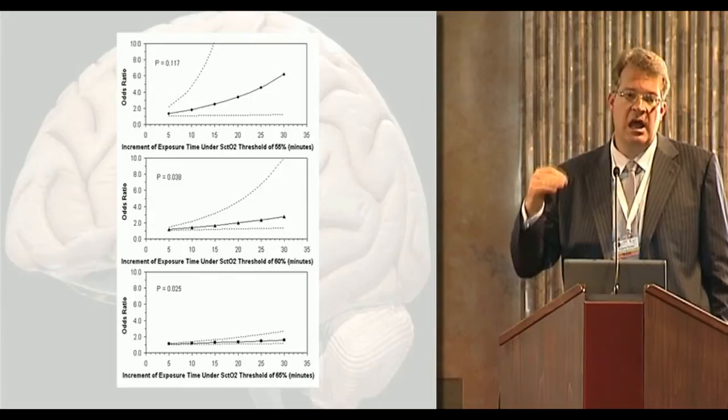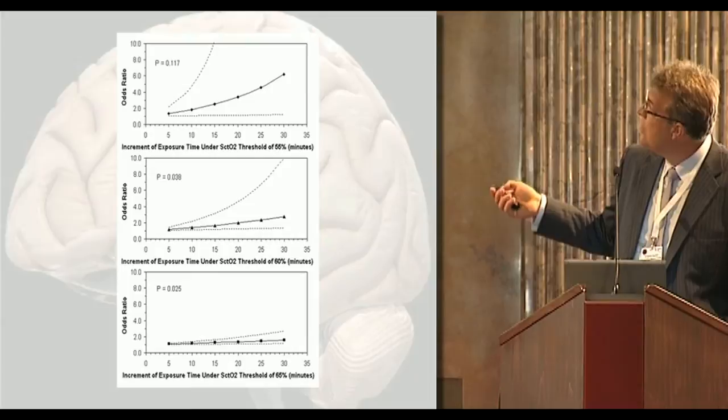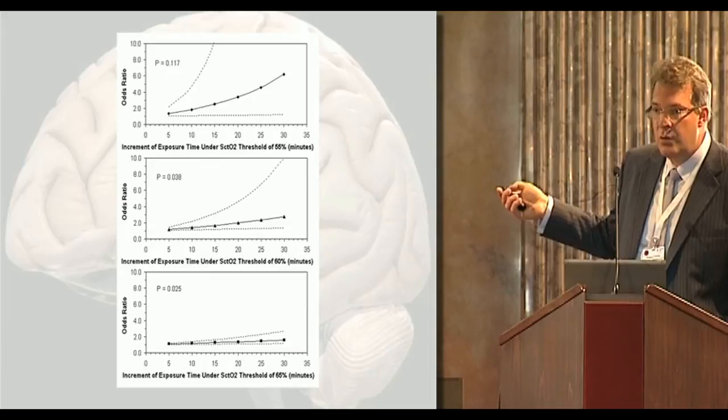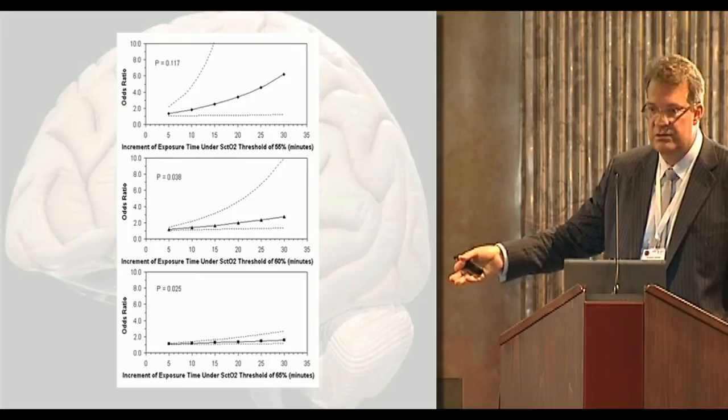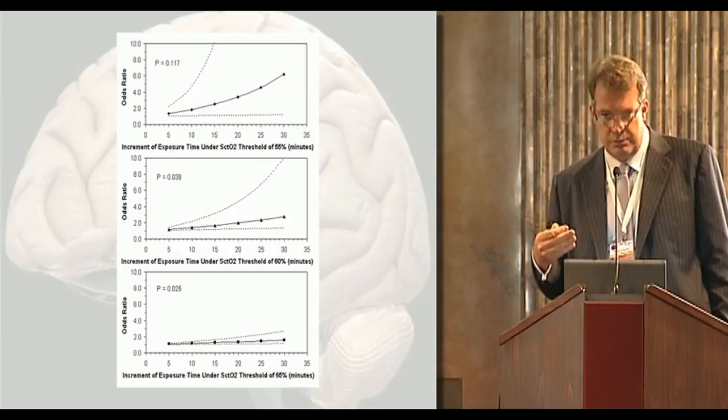The lower the threshold chosen and the longer time spent under it, the more likely patients are to have an adverse outcome. Mathematically, the 65% and 60% curves are more or less linear — not surprising, since longer time on the operating table generally means worse outcomes. But the 55% curve becomes exponential. That's why, based on the data and my own clinical experience, I use 60% as my threshold.